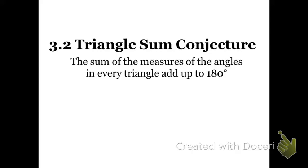In this video, you'll learn the triangle sum conjecture, which says that in any triangle, the sum of the measures of the interior angles add up to 180 degrees. That goes for every type of triangle: obtuse, acute, right, equiangular, scalene, or isosceles. One thing you know about triangles is that the three interior angles will always add up to 180.